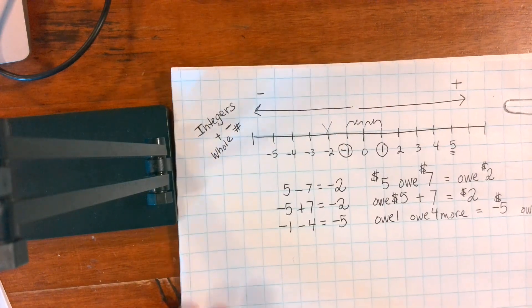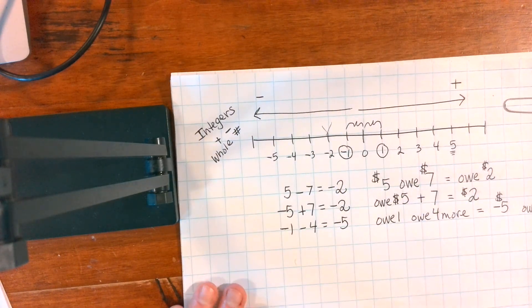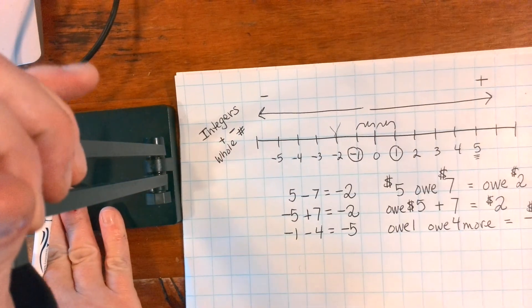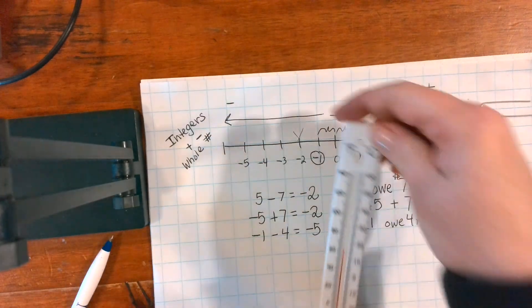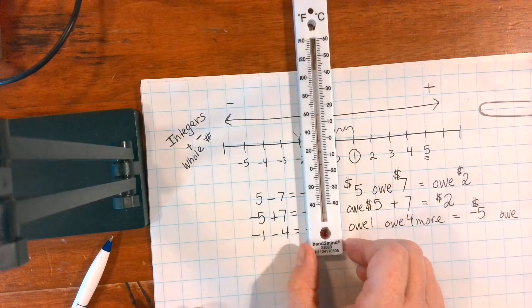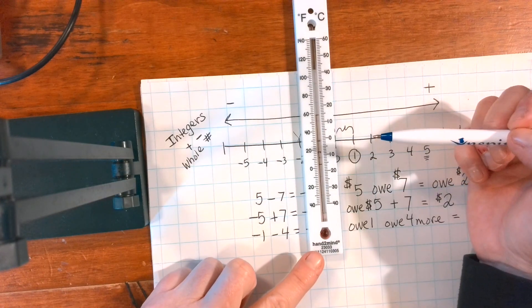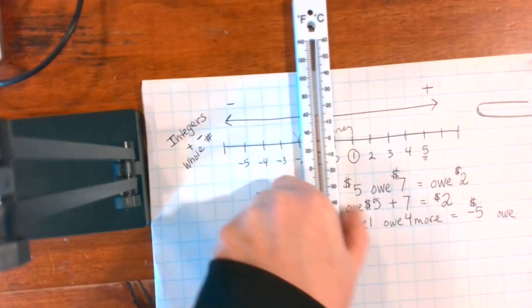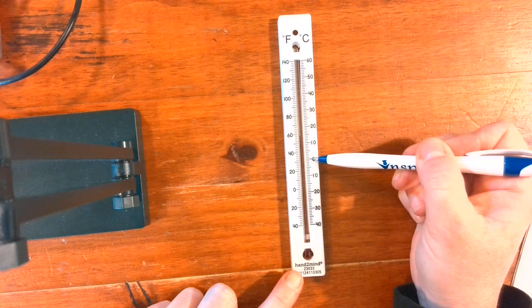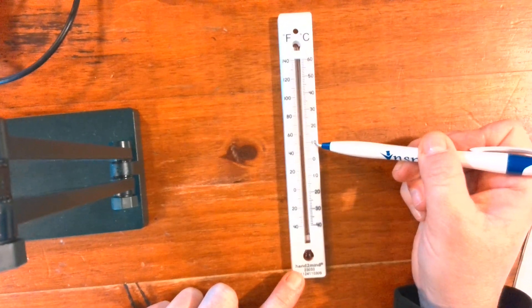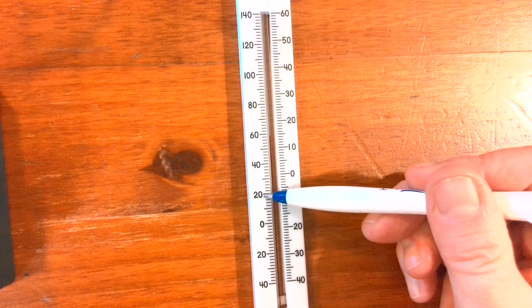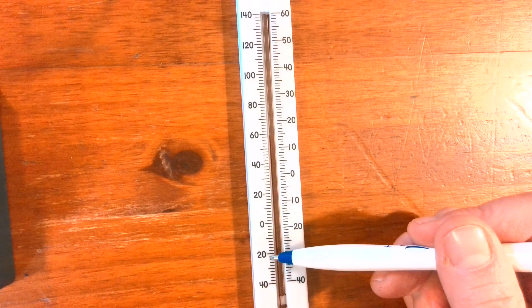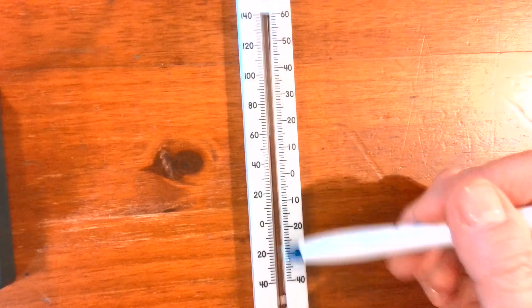We can think about our number line and move right with positive numbers and left with negative numbers, or we can think of money and what we owe. Our final way to think about it is with a thermometer — it's just a vertical number line, an up-and-down number line. Positive ten and negative ten are the same distance from zero. Positive twenty and negative twenty are the same distance from zero.